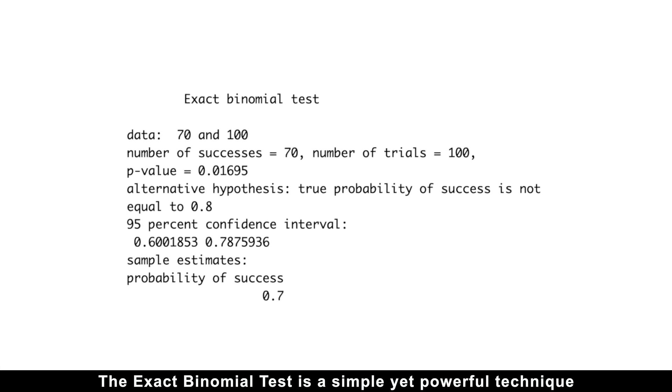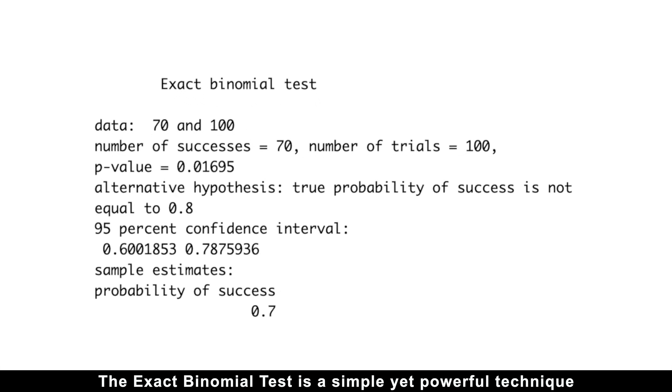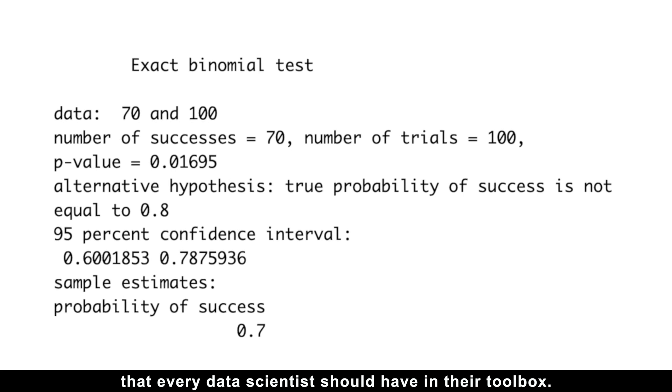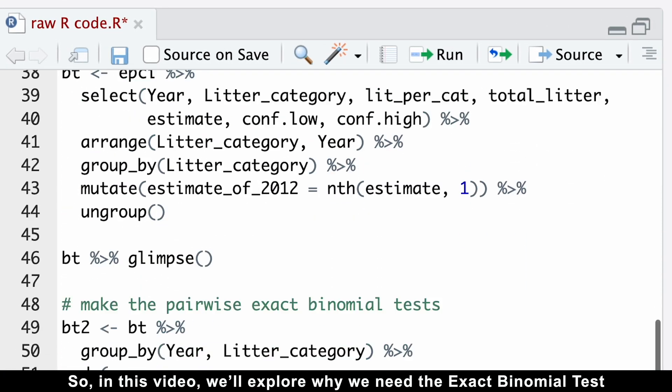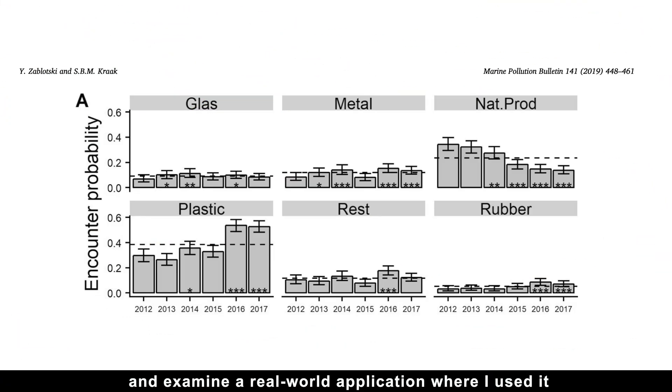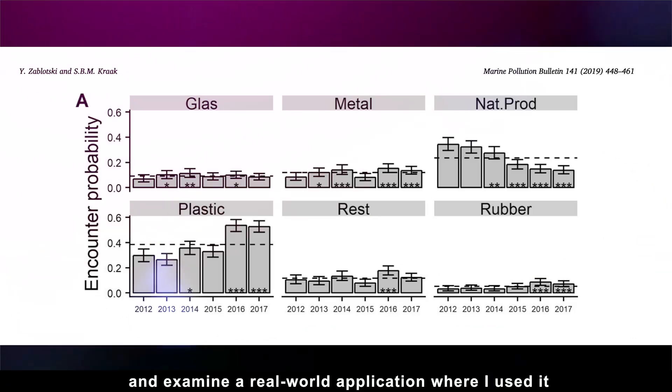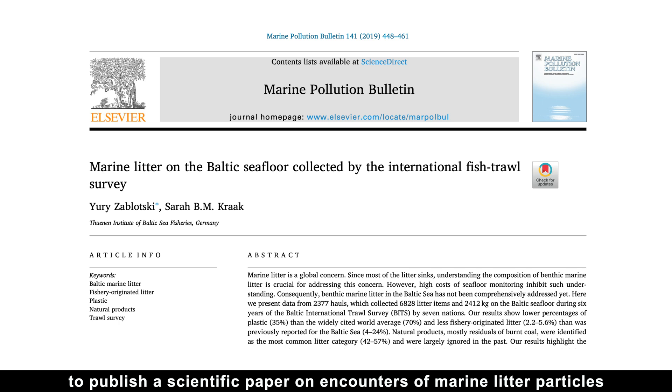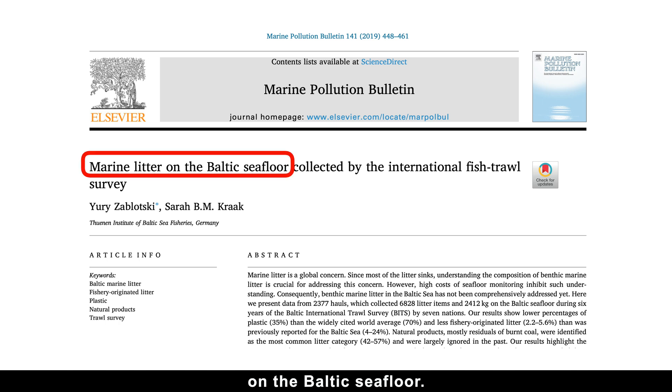The exact binomial test is a simple yet powerful technique that every data scientist should have in their toolbox. In this video, we'll explore why we need the exact binomial tests and examine a real-world application where I used it to publish a scientific paper on encounters of marine litter particles on the Baltic seafloor.